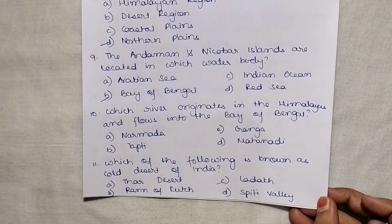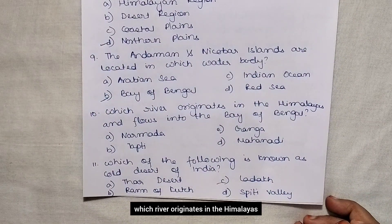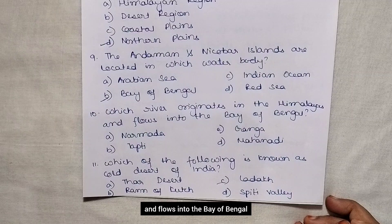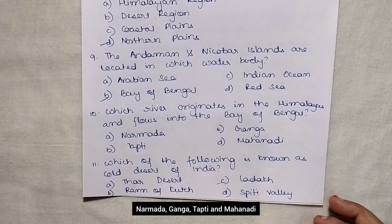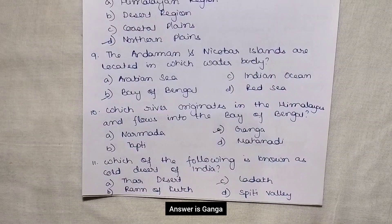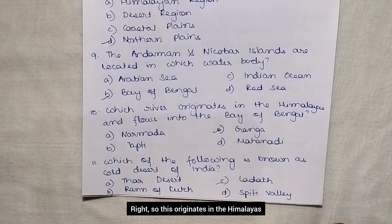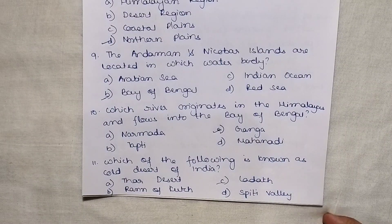Which river originates in the Himalayas and flows into the Bay of Bengal? The options are Narmada, Ganga, Tapti, and Mahanadi. Answer is Ganga, which originates in the Himalayas and flows into the Bay of Bengal.